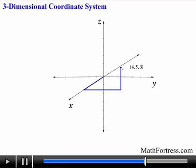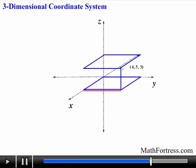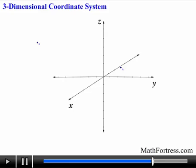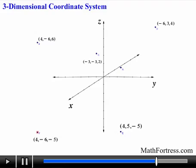For example, a coordinate is plotted as follows. We first move along the x-axis four units in the positive direction, then we move five units parallel to the y-axis in the positive direction, and then move parallel along the z-axis in the positive direction. To draw a corresponding box for better perspective, we draw three additional lines with the same length for each coordinate. In the same way, the following points are plotted: Point B at (4, -6, 6), Point C at (-3, -3, 2), Point D at (-6, 3, 4), Point E at (4, 5, -5), Point F at (4, -6, -5), Point G at (-3, -3, -2), and Point H at (-6, 3, -4).